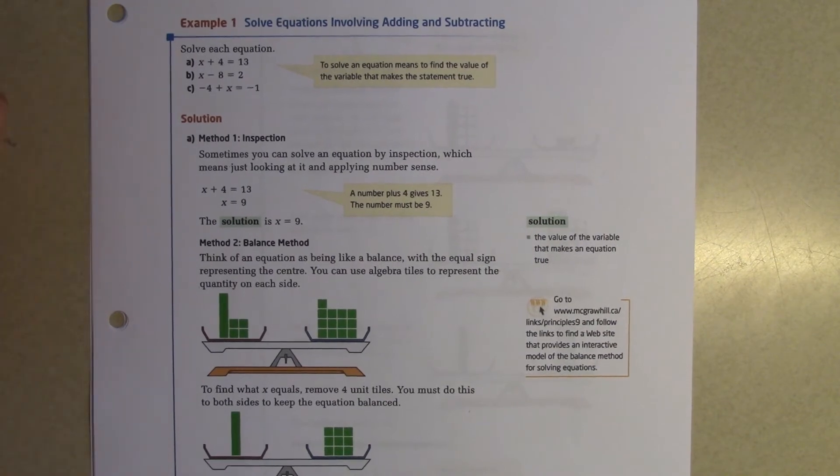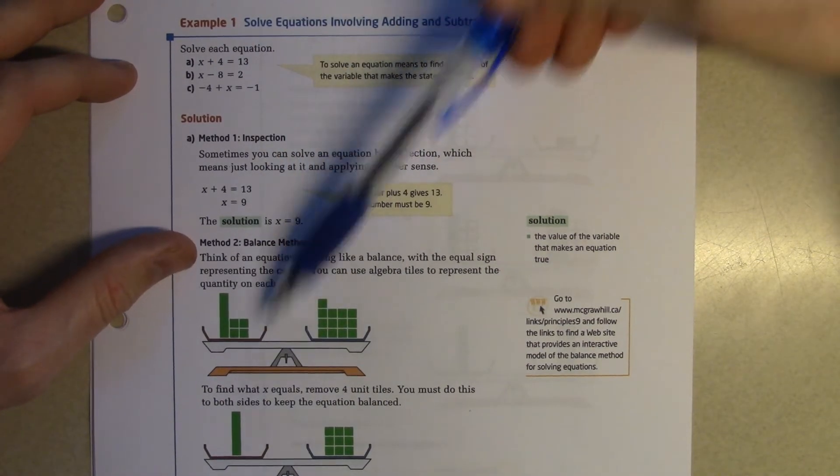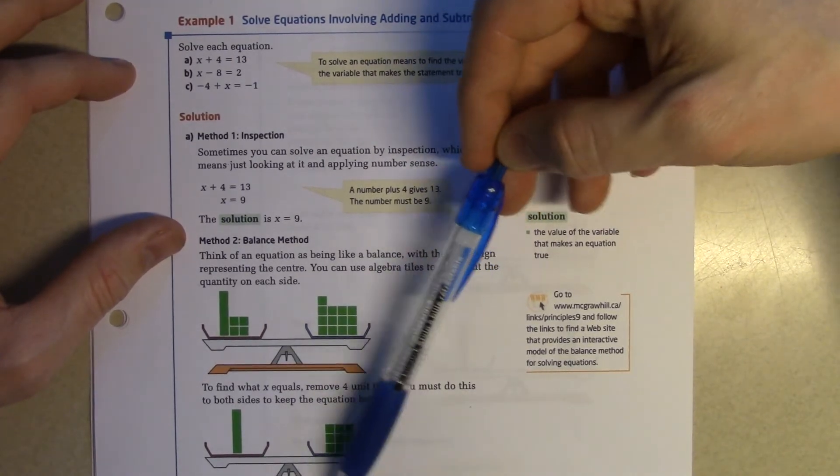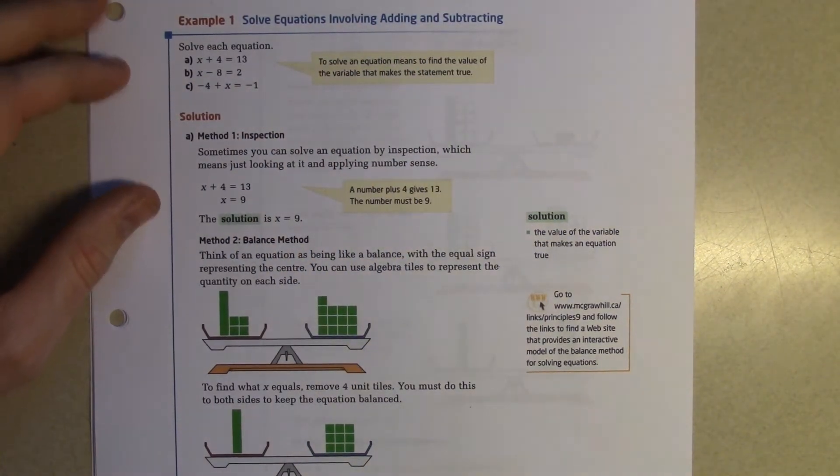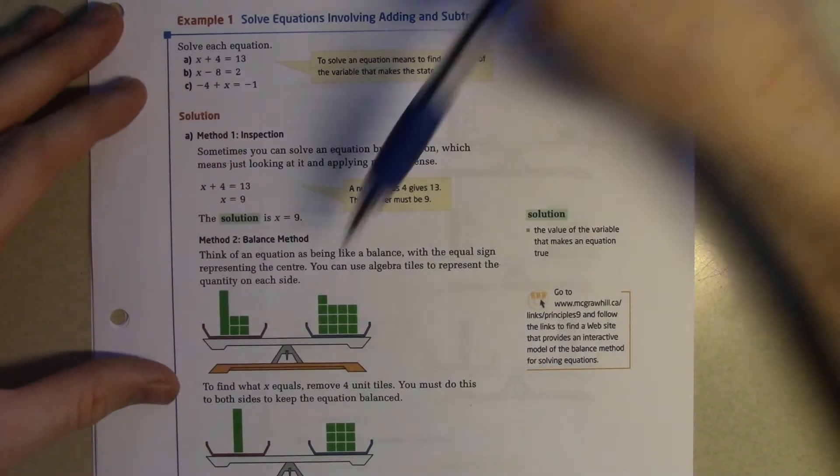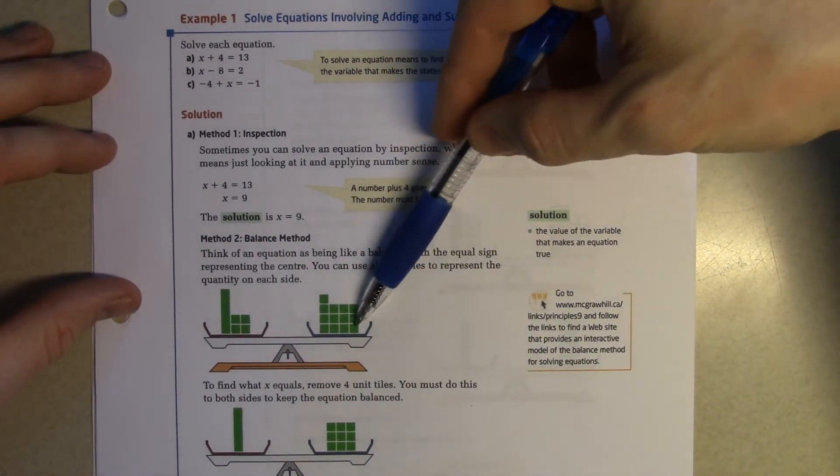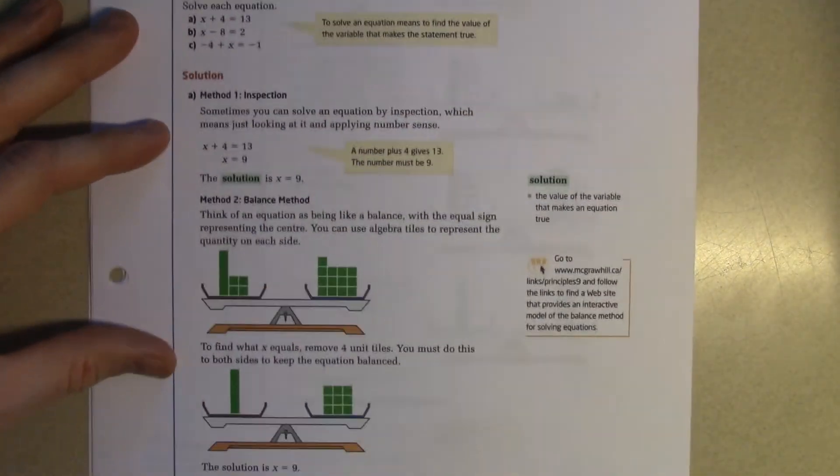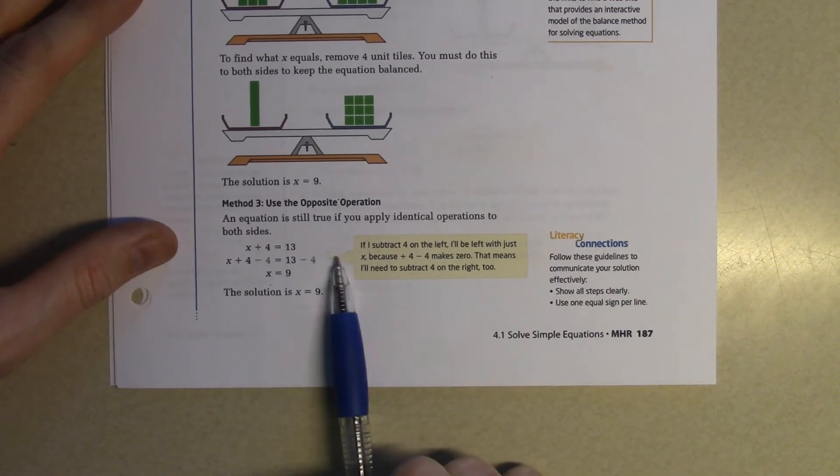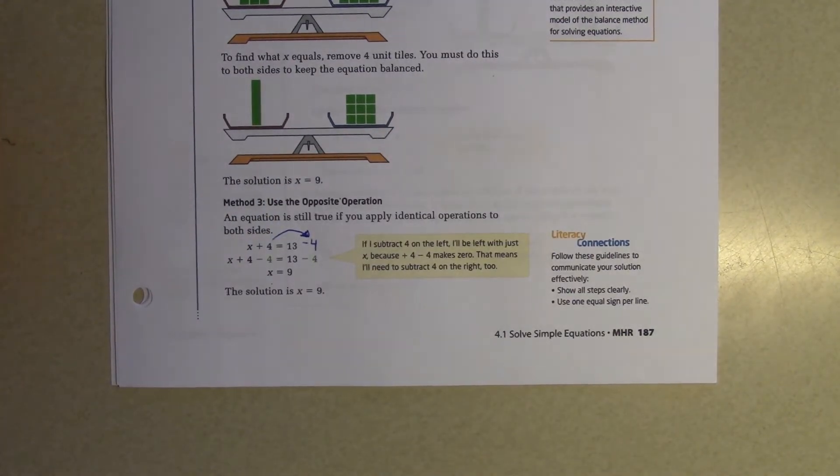Example one, solve equations involving adding and subtracting. They're going to show us three methods here. You can by all means read through inspection and balance method, but ultimately you're going to use method three for grade 10, 11, 12, university, rest of your life. I'm not going to worry about these two methods. When you do the homework and it says use inspection or balance, you can just use the opposite operation method. Let's skip to method three. Here's our question, x plus 4 is equal to 13. So opposite operations, you're going to subtract 4 from both sides, x is equal to 9. Another way, still the same method, opposite operations, but you're going to move the 4 over the equal sign and you get the same thing.